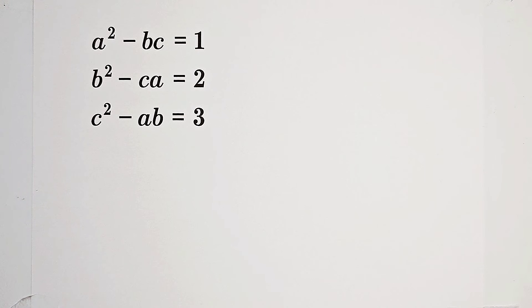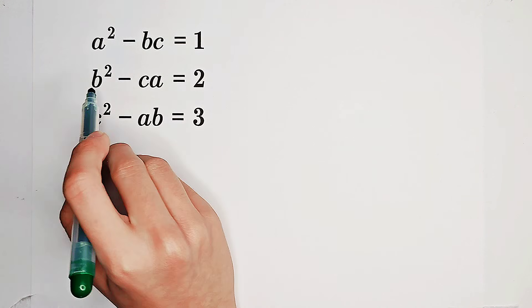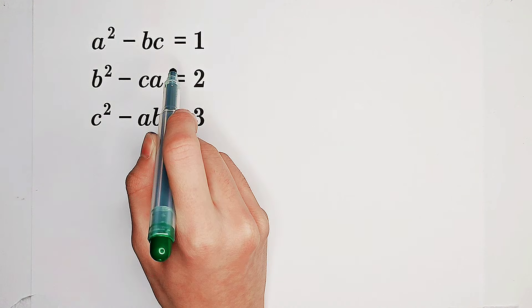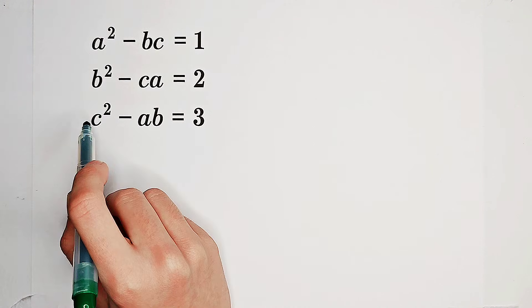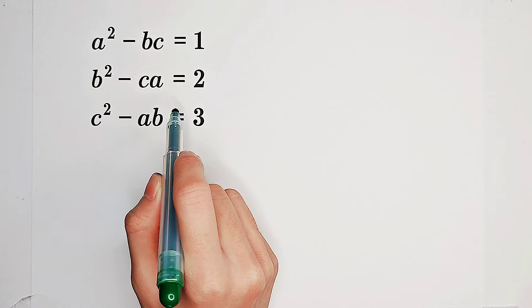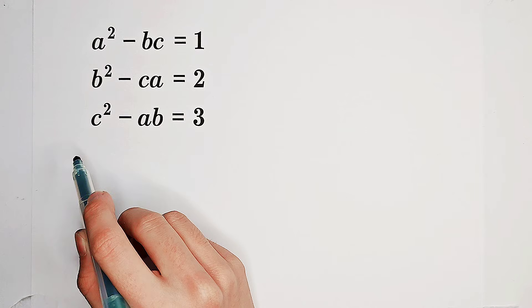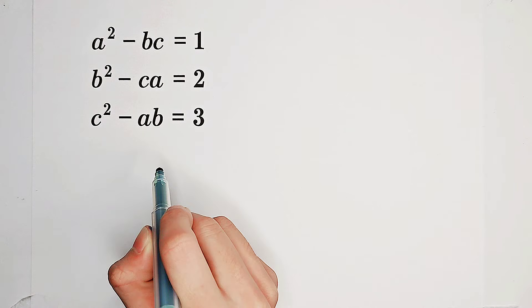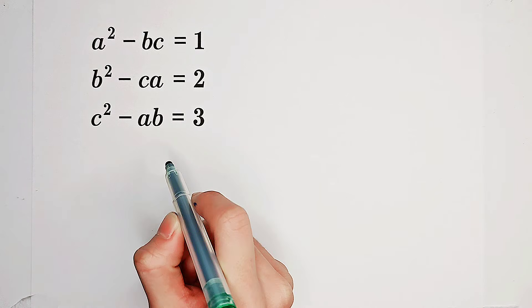Solve this system of equations: a squared minus bc equals 1, b squared minus ca equals 2, and c squared minus ab equals 3.